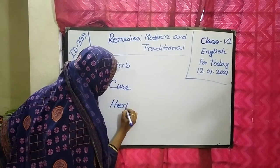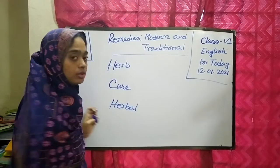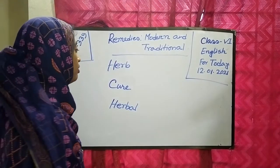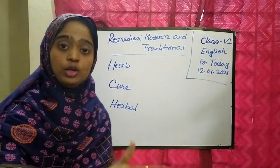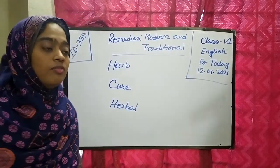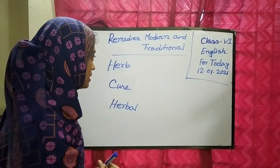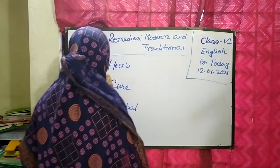This one is very easy. Can you pronounce it? Herbal. What is the meaning of herbal? Related to herb — things which are made from herb, used for flavoring in cooking and medicine.